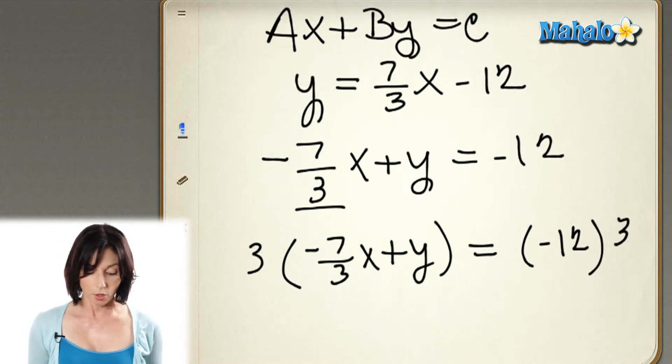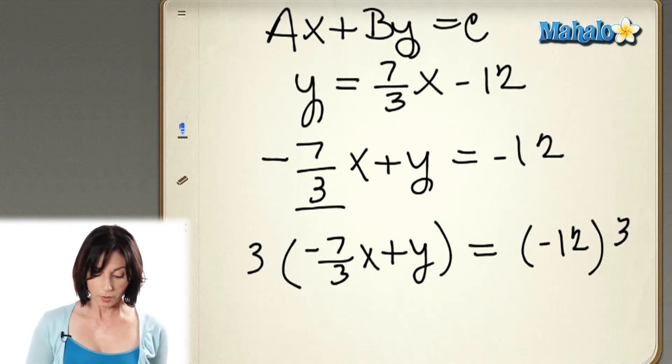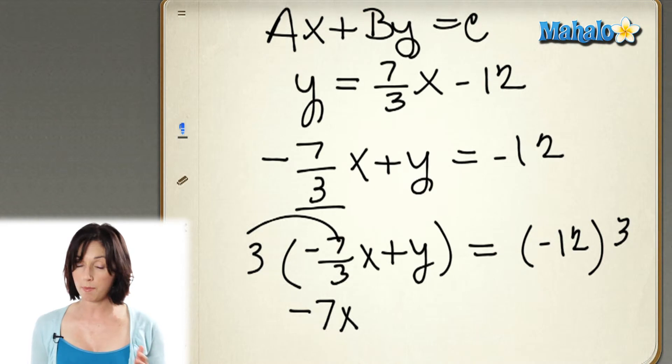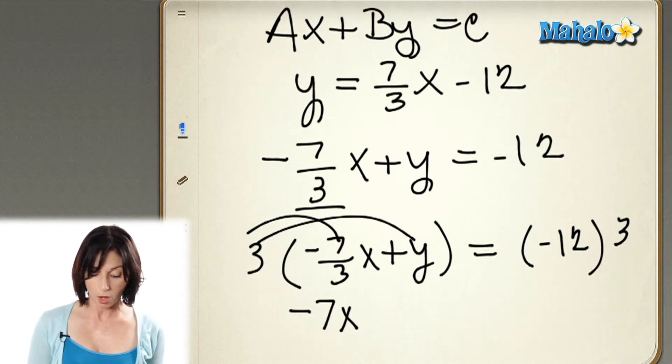So on this side, on the left side of the equation, when I'm multiplying the x term here, the 3's cancel out, and I get negative 7x. Now don't forget, I also have to multiply y by that 3. So when I multiply positive y by positive 3, I get a plus 3y.